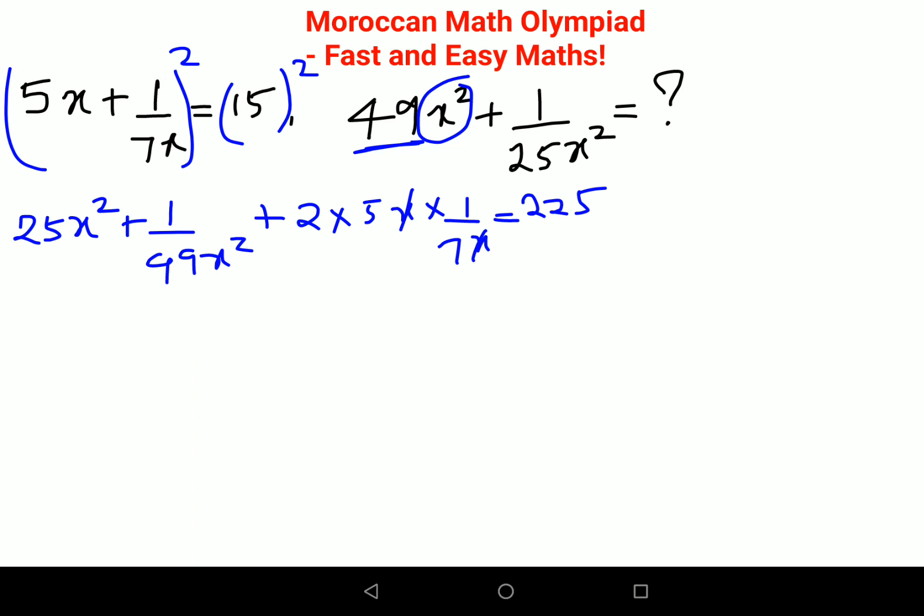Here this entire thing will become 2 into 5 which is 10, 10 upon 7. This is basically now coming out to be 10 upon 7. Okay, so now we will keep all the x's on one side and the numericals on another side.